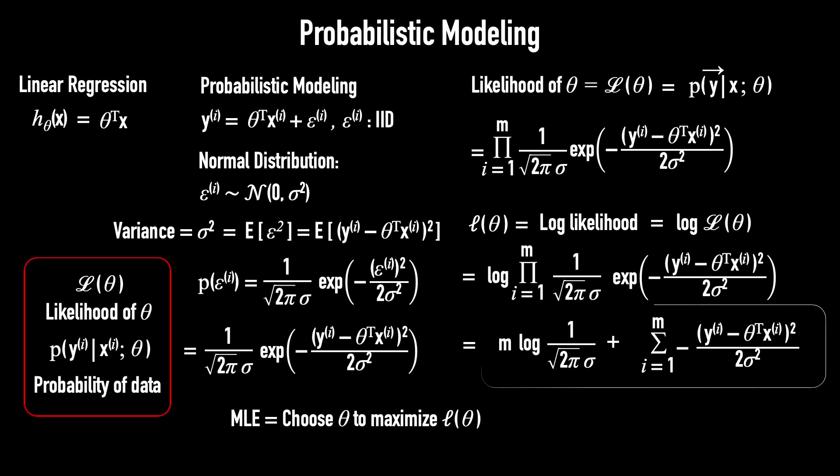Now, let's look at this result of the log likelihood. The first term is a constant, so it doesn't affect the optimization. Therefore, maximizing the log likelihood is equivalent to maximizing the second term, or minimizing this term instead. And as you know, this is exactly the cost function J(θ).